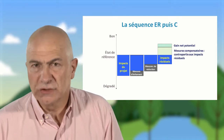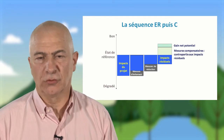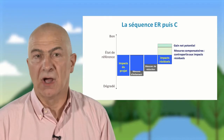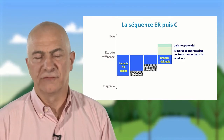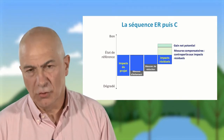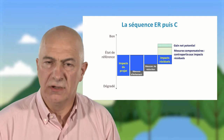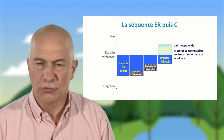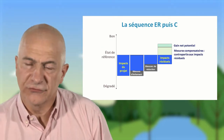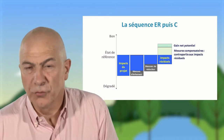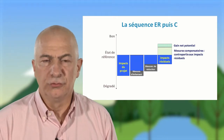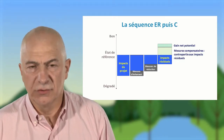Dans toute la mesure du possible, les dispositions des mesures compensatoires devraient même rechercher à obtenir un gain net potentiel, de façon à reconquérir progressivement les milieux naturels et leur qualité de fonctionnement. Cette séquence du C, donc de la compensation, est la troisième séquence du éviter, réduire, compenser et, hiérarchiquement, elle ne peut intervenir qu'après les deux premières étapes.